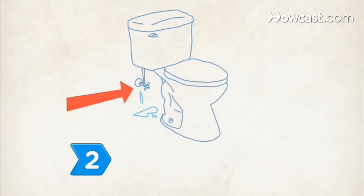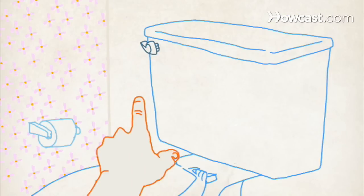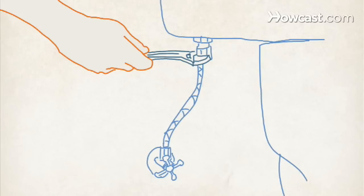Step 2. Replace the supply line if the water is leaking from your existing supply line. Turn the water off by closing the shutoff valve and flush the toilet to remove most of the water. Use a wrench to disconnect the hex nuts that connect the old supply line to the shutoff valve and to the toilet tank.